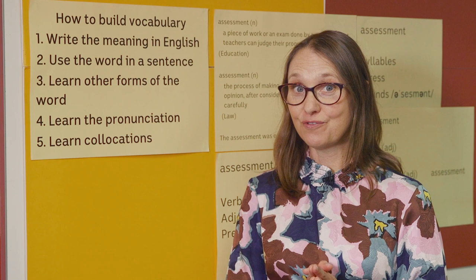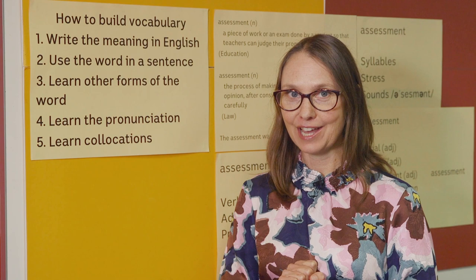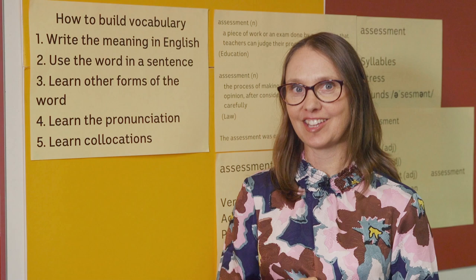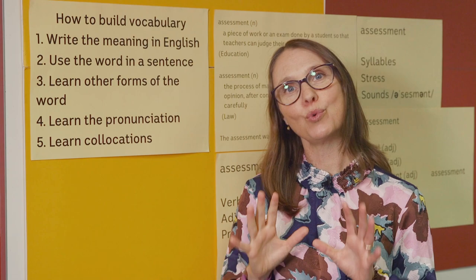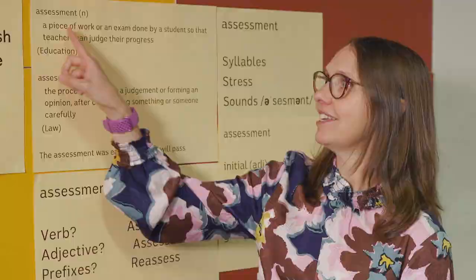Here are 5 easy steps you can follow to build your academic vocabulary. First, write down the meaning of the word in English. Make sure you use the word in a sentence. Learn other forms of the word and the pronunciation. And make sure you learn collocations as well. Collocations are words that usually go together. Let's have a look at an example and use these 5 steps to help us build our vocabulary.